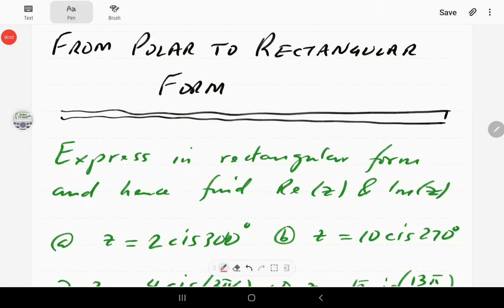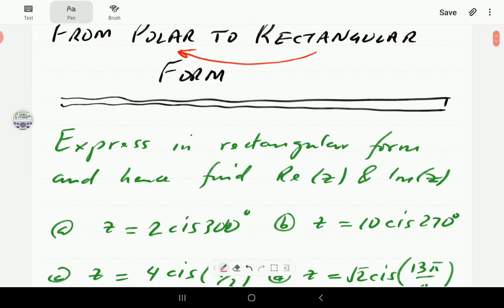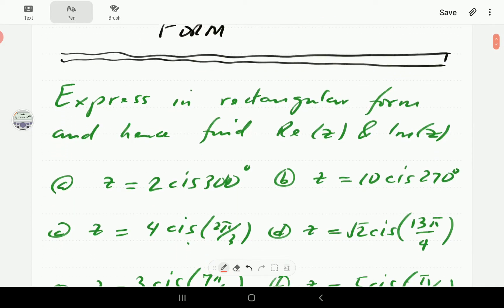Okay, in the previous video we showed how to convert complex numbers from rectangular form to polar form. In this video we're going to show you how to convert from polar form to rectangular form. You should find this process much easier, or much less involving, than converting from rectangular form to polar form.